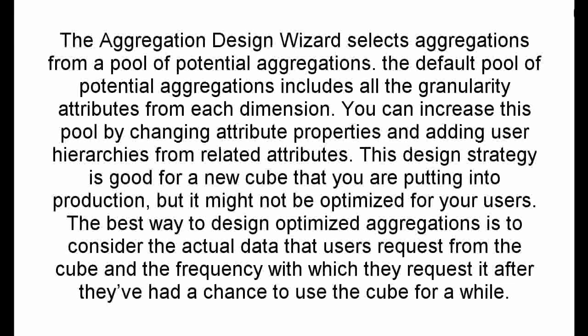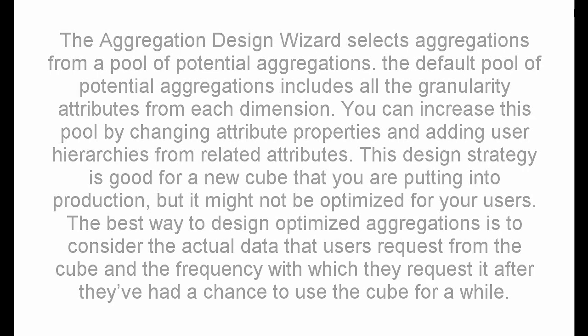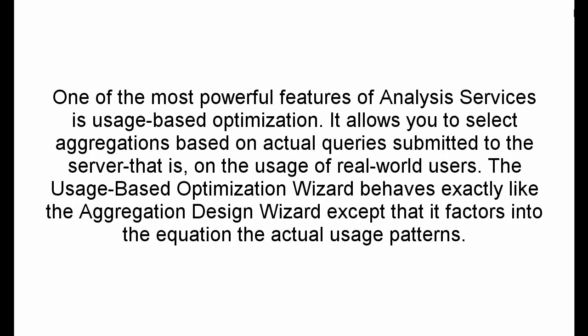The aggregation design wizard selects aggregations from a pool of potential aggregations. The default pool of potential aggregations includes all the granularity attributes from each dimension. You can increase this pool by changing attribute properties and adding user hierarchies from related attributes. This design strategy is good for a new cube that you are putting into production, but it might not be optimized for your users. The best way to design optimized aggregations is to consider the actual data that users request from the cube and the frequency with which they request it. One of the most powerful features of Analysis Services is usage-based optimization, which allows you to select aggregations based on actual queries submitted to the server — that is, on the usage of real-world users. The usage-based optimization wizard behaves exactly like the aggregation design wizard except that it factors in the actual usage patterns.